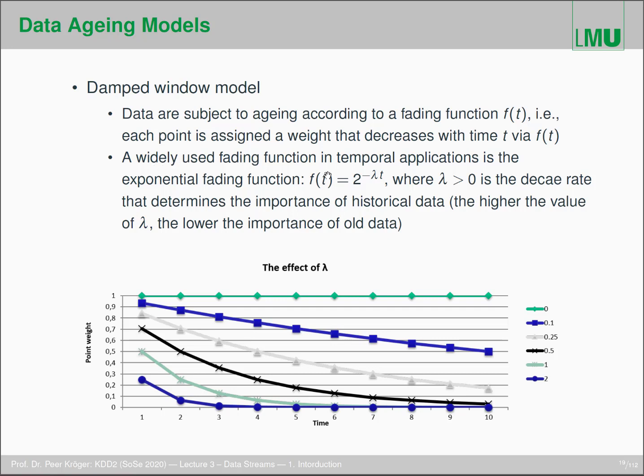You can use different fading functions, but a very commonly used fading function in temporal applications is an exponential fading function like this one here. So f(t), the weight of an object at time slot t, is determined by 2 to the power of minus lambda t, where lambda is called the decay rate. You probably know from chemistry, so lambda should be greater than zero, obviously. What does it do with weighting? Well, the higher the value of lambda, obviously because it's to the power of minus lambda, the lower is the importance.